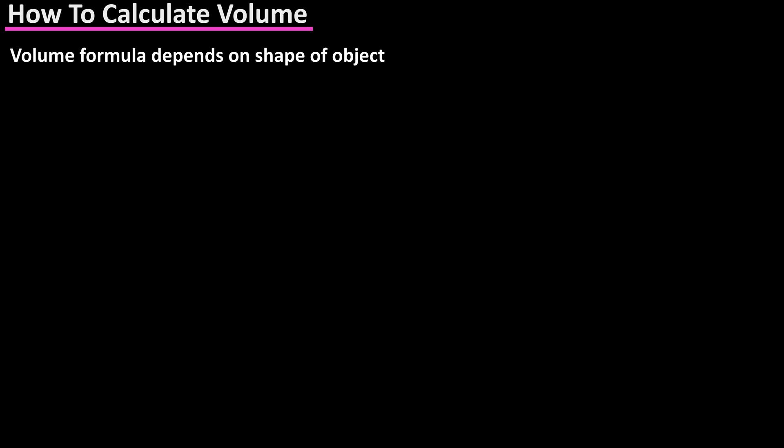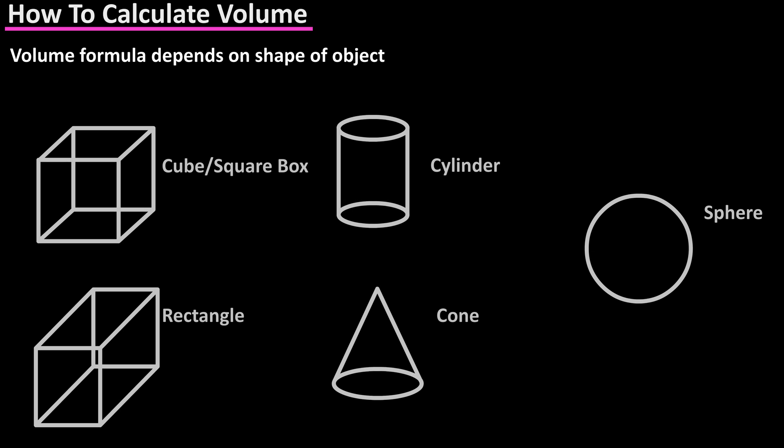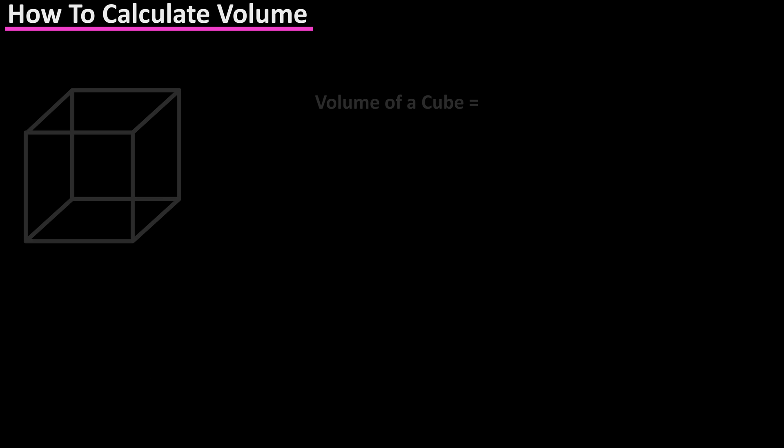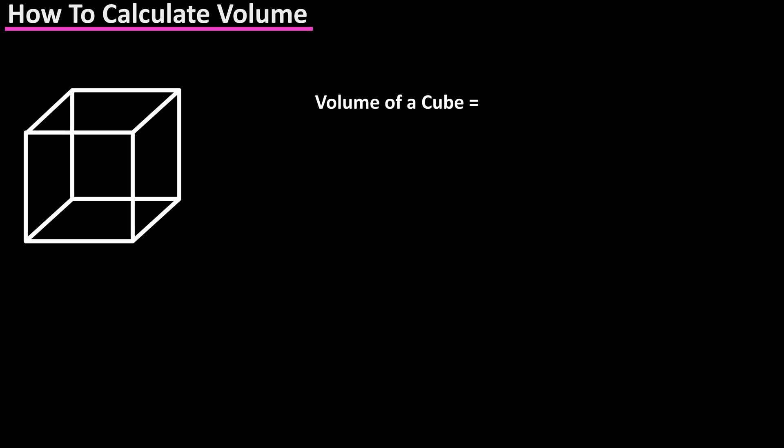The formula for calculating volume depends on the shape of the object you want to calculate the volume of, and in this video we're going to cover a cube or a square box, a rectangle, a cylinder, a cone, and a sphere or a ball, starting with a cube or square box.